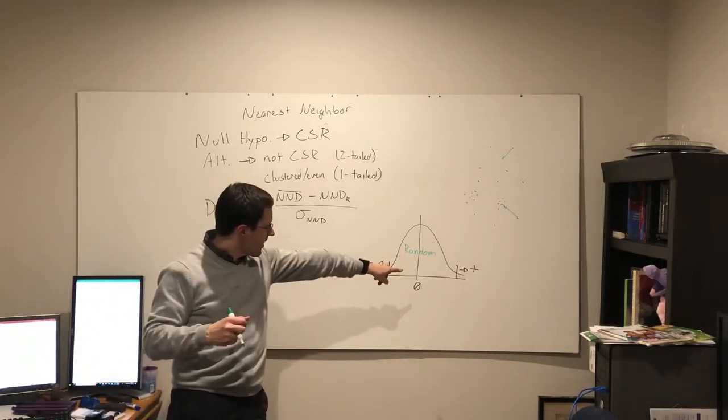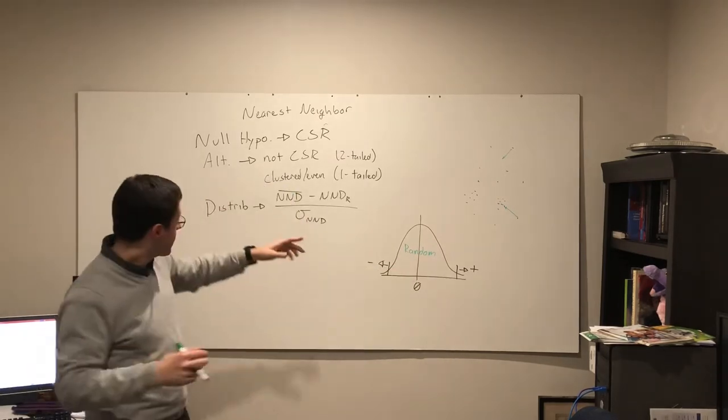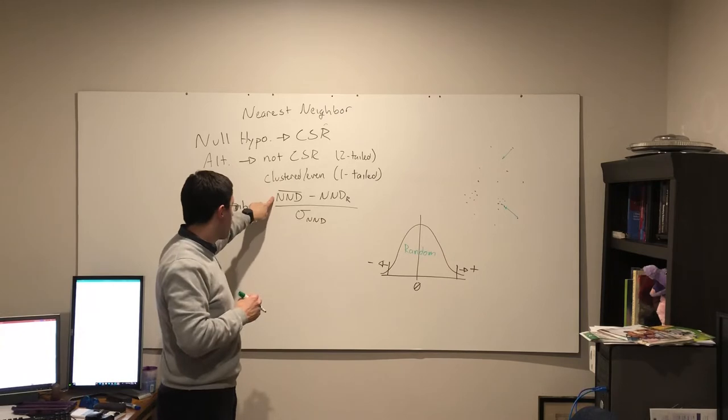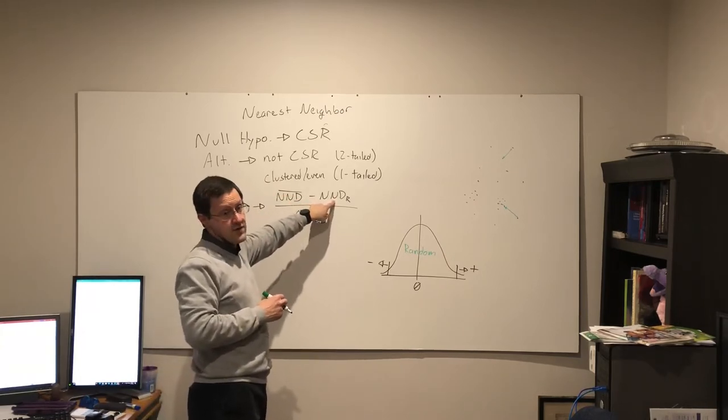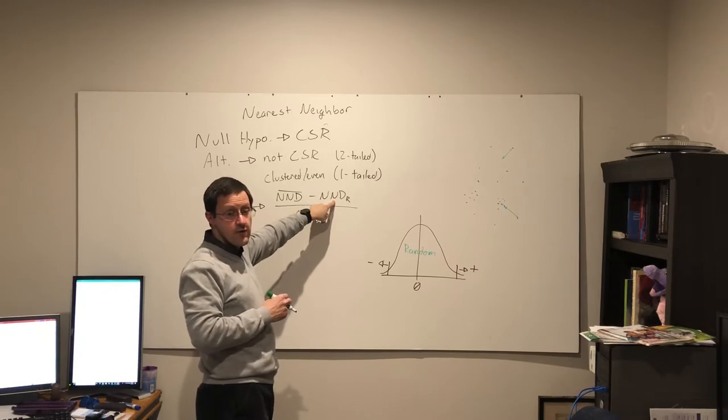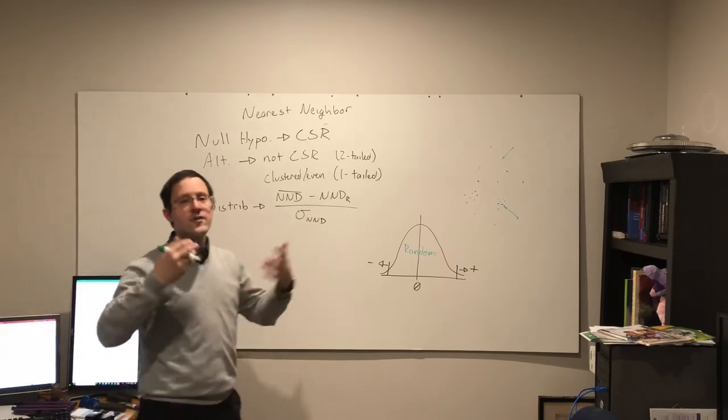If I do a one-tail test on the plus side, the plus side, that would mean this average distance is a lot longer than what I would expect if they were randomly located. To get that average distance longer, they have to be spread apart.